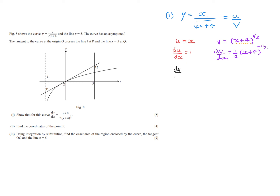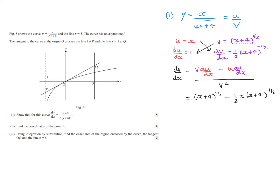Now, dy by dx is equal to v multiplied by du by dx, minus u multiplied by dv by dx, all divided by v squared. So let's work this through. v multiplied by du by dx gives us x plus 4 to the power of a half. We're subtracting u multiplied by dv by dx, so that's a half x times x plus 4 to the power of negative a half. The whole thing is divided by v squared. If you square the v function, you simply get x plus 4.